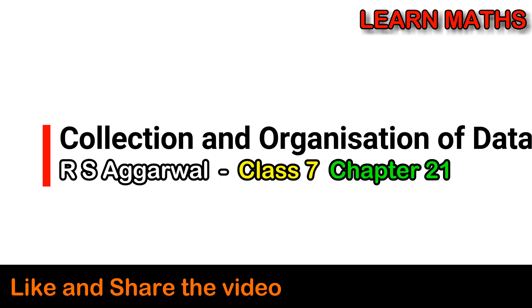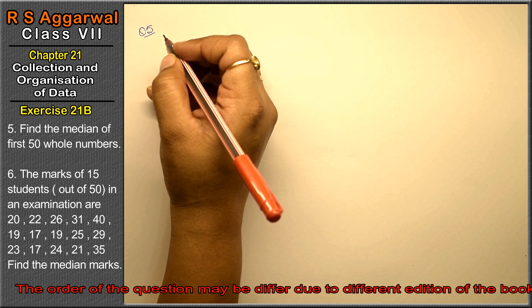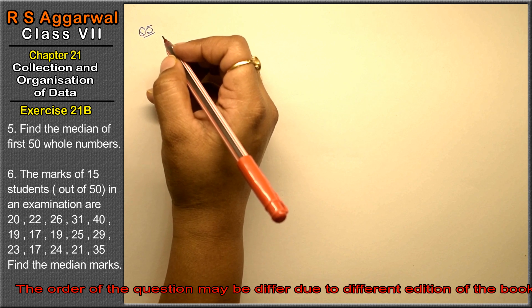Let's do question number 5 of exercise 21B, that is collection and organization of data. Question number 5 is find the median of first 50 whole numbers.